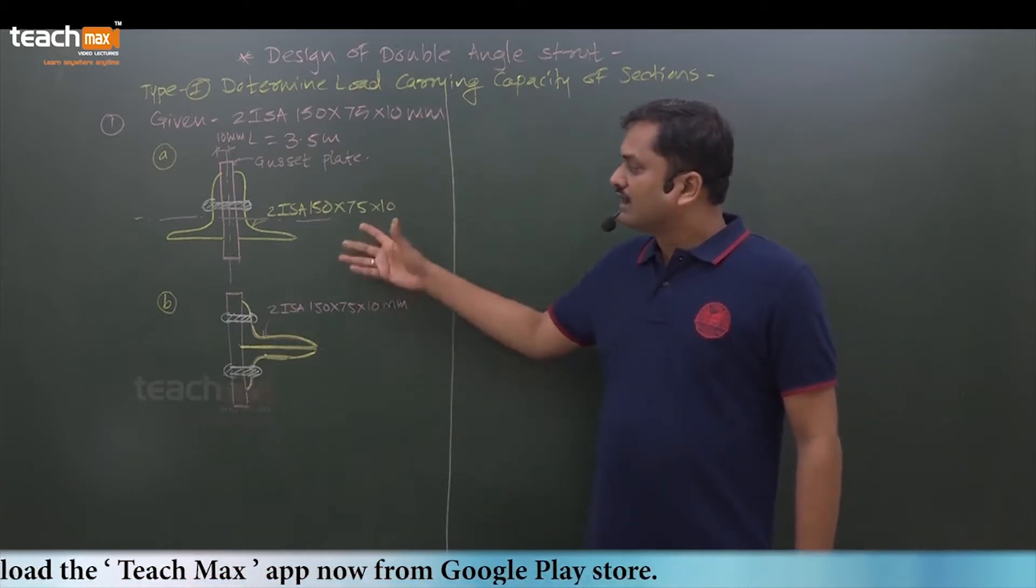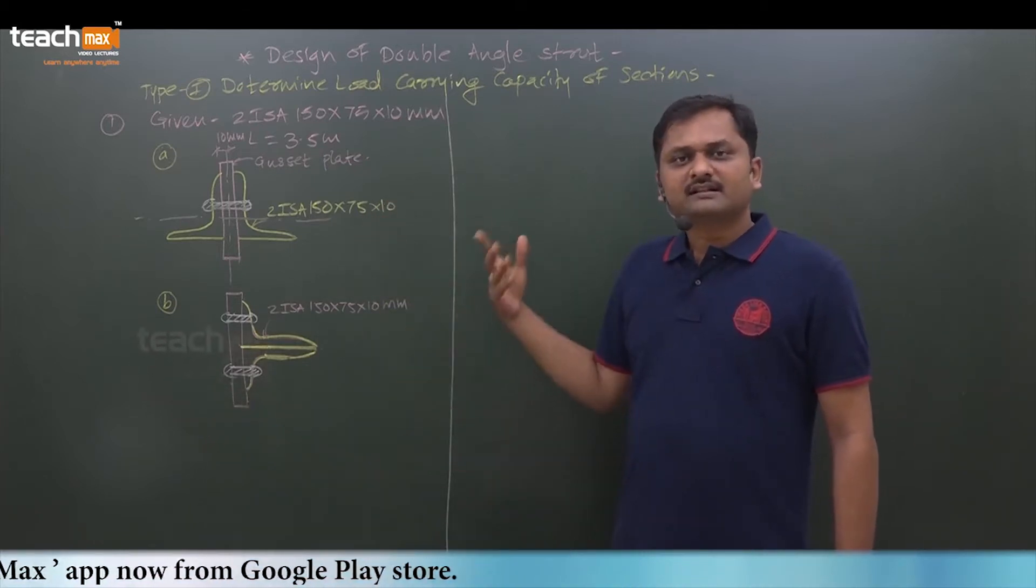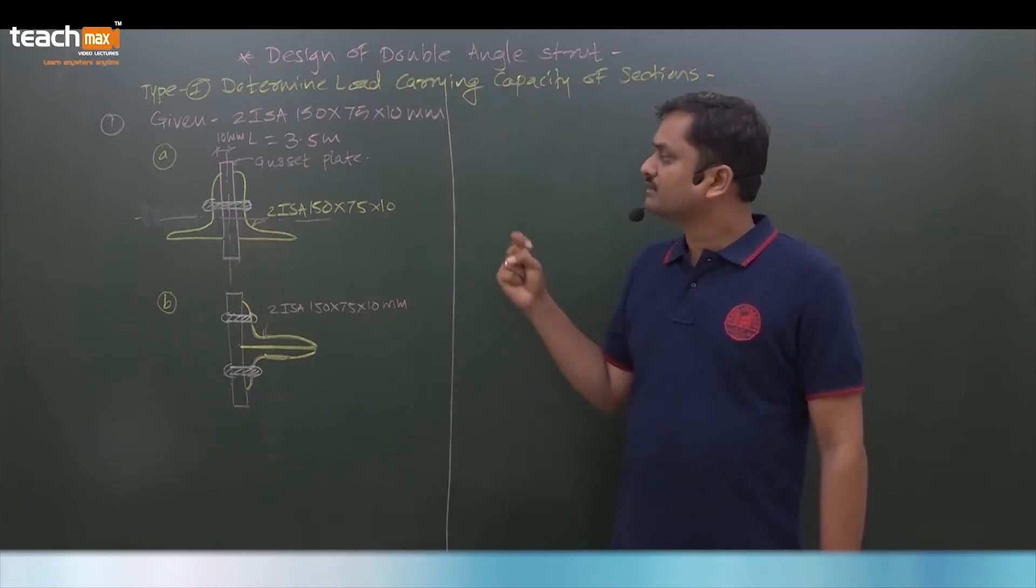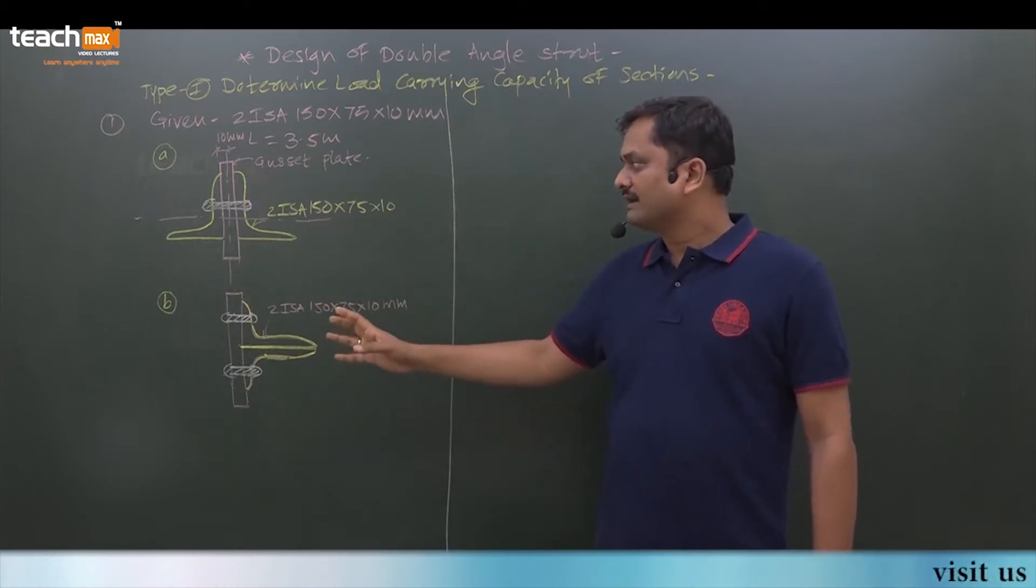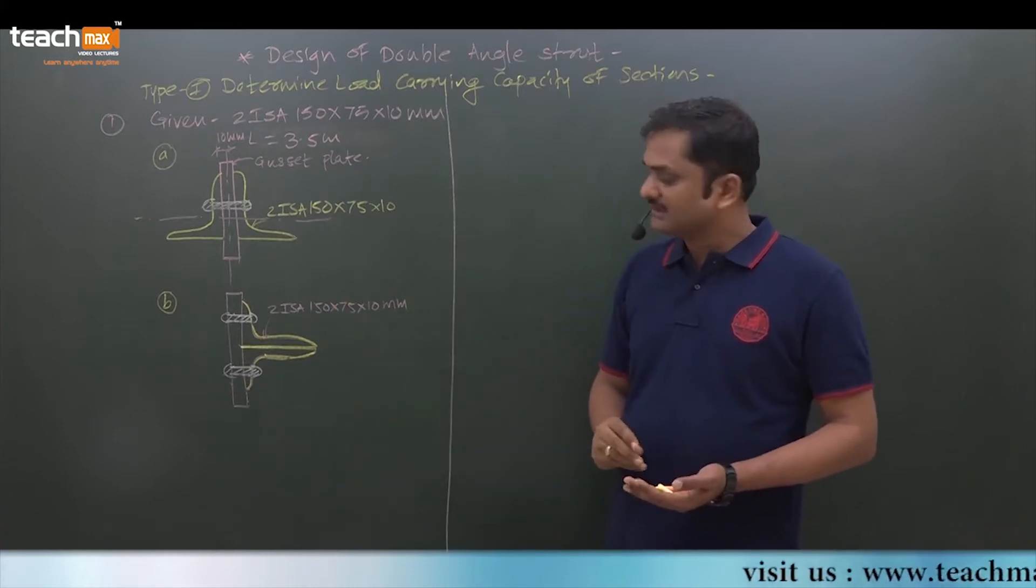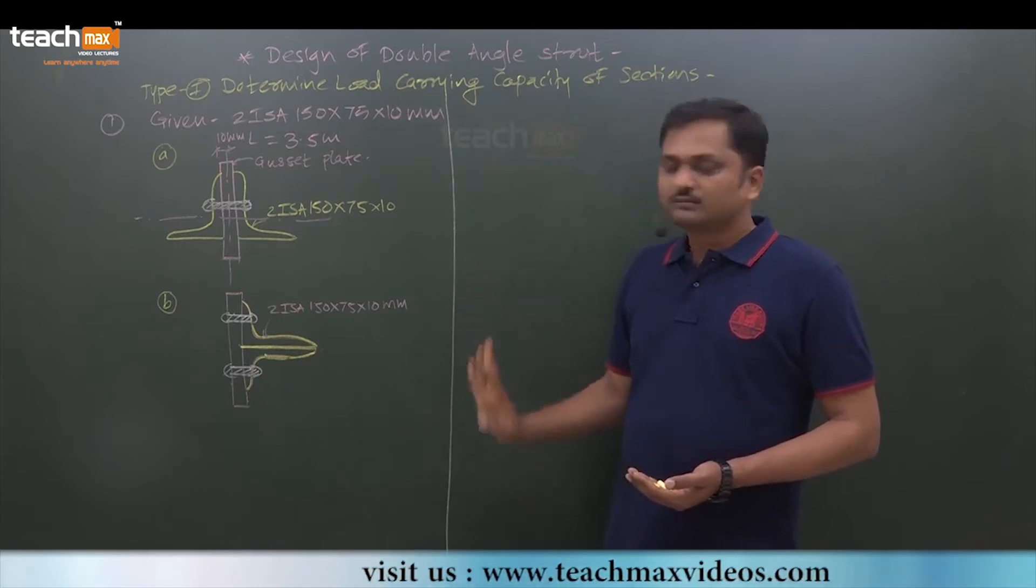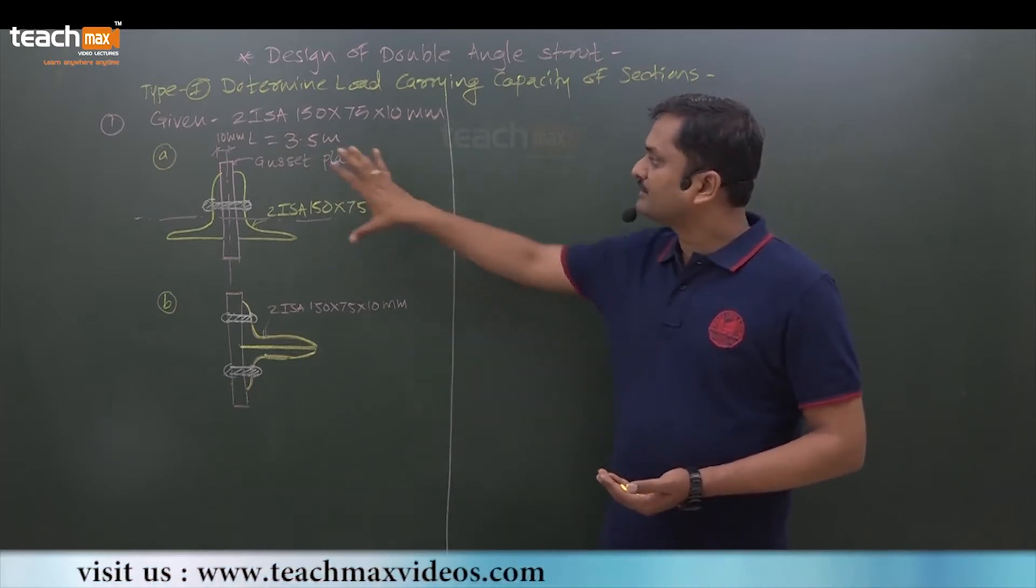So out of these, these are the two possibilities that we can use the angle section: either we will use back to back two angle sections, or we can go with both angles on one side of the gusset.